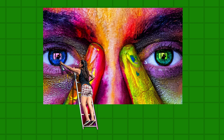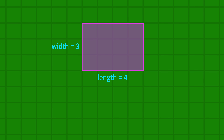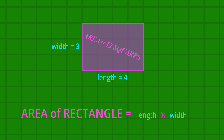First, let's figure out the rule for the area of a rectangle. Imagine this rectangle is a wall to be painted. Its length is four and the width is three. Count the squares — the area to be painted is twelve squares. Four multiplied by three is twelve. We multiplied the length by the width to find the area of the rectangle. So the rule is: the area of a rectangle equals the length multiplied by the width.